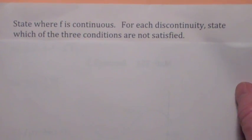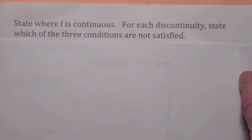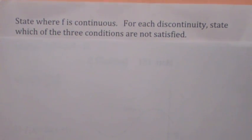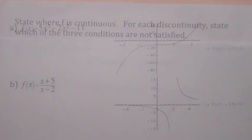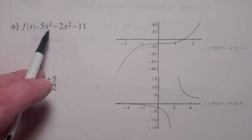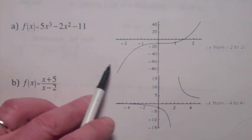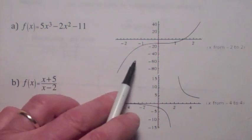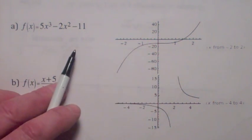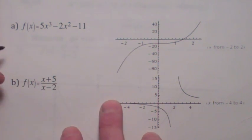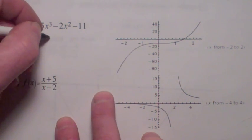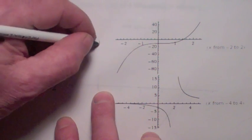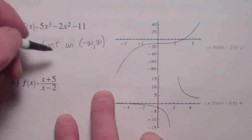In each problem we're going to state where the function is continuous, and for each place where it's not, we're going to state which of the three conditions are not satisfied. This first one is a polynomial function. If you look at the graph, it's continuous at every real number, so we say it's continuous on the interval negative infinity to infinity.